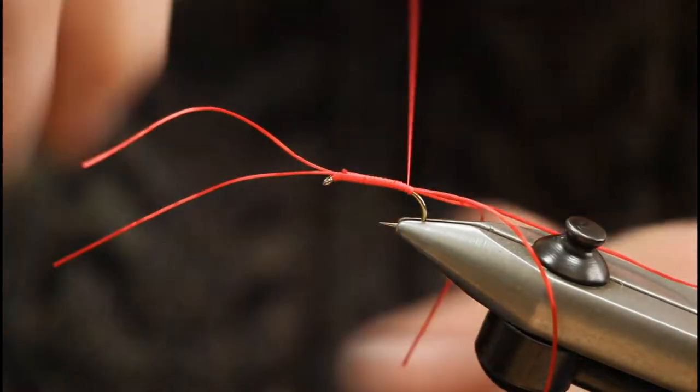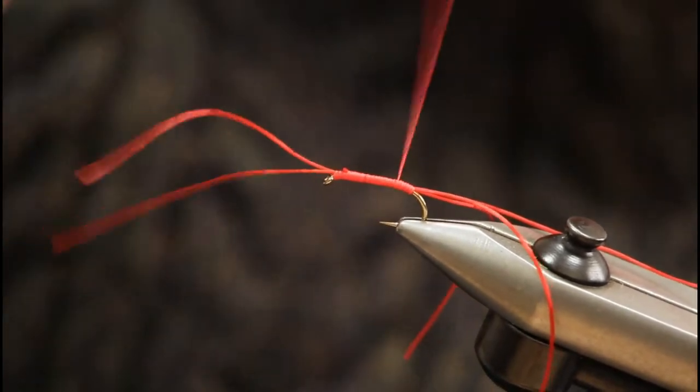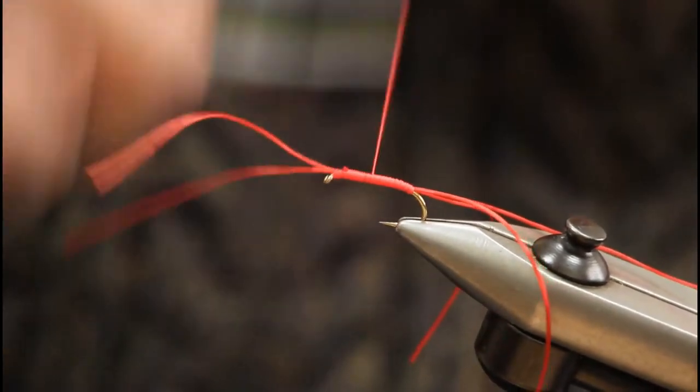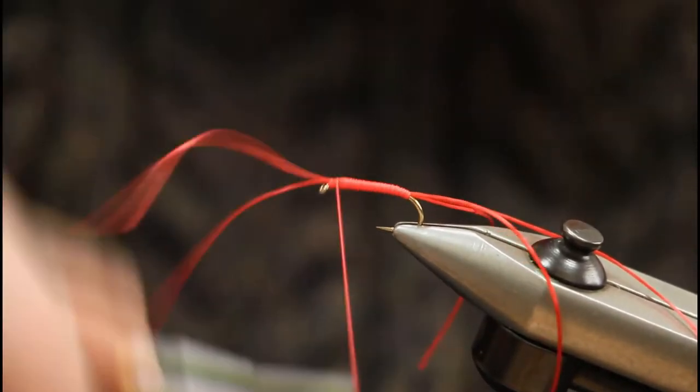Once we're there, what we want to do is build up the body slightly with the GB Floss. We go up and down in touching turns just to try and make a nice smooth body.